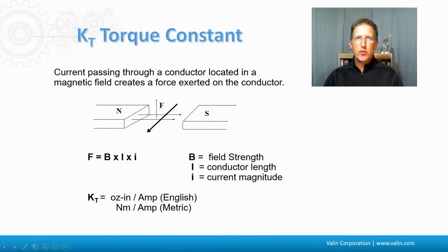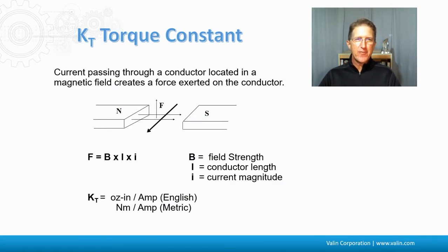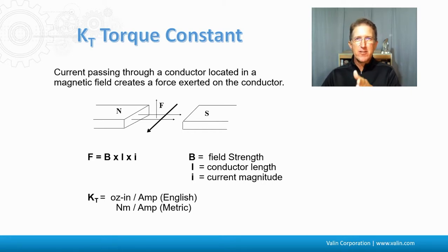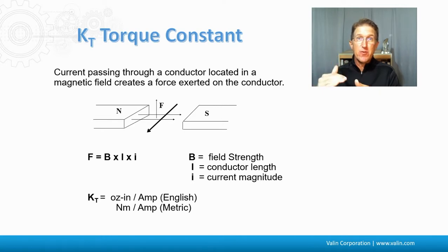There's the KT, or torque constant. When current passes through a conductor, like a copper wire, that is located in a magnetic field, it creates a force that is exerted on the conductor. Now if that conductor is held steady, the magnets are going to move. If the magnets are held steady, the conductor is going to move.